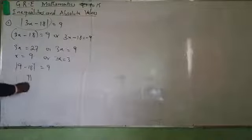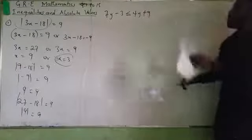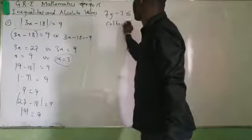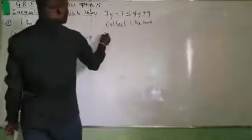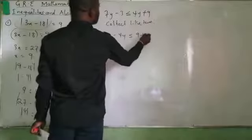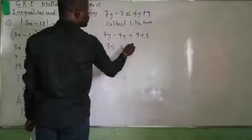The next question: I have 7Y minus 3 less than or equal to 4Y plus 9. This is a nice example of an inequality. What you need to do is collect like terms: 7Y minus 4Y less than or equal to 9 plus 3, giving 3Y less than or equal to 12.